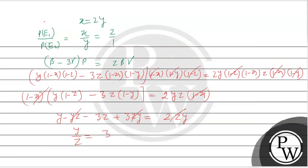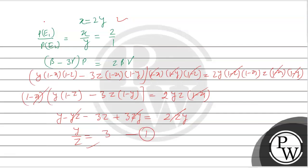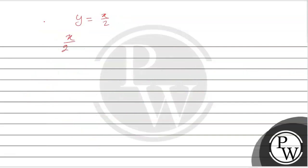So y/z equals 3. From the previous result, x equals 2y. Substituting y's value into equation 1, we get x upon 2z equals 3, which gives x/z equals 6. So the final answer is x/z equals 6, i.e., the ratio of the probability of E1 to the probability of E3 is 6. I hope you understand, thank you.